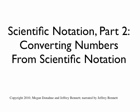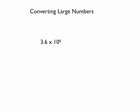Going from scientific notation to ordinary notation is just the reverse of writing numbers in scientific notation. Consider the number 3.6 times 10 to the sixth power. Because the power of 10 is positive 6, we need to move the decimal point 6 places to the right.